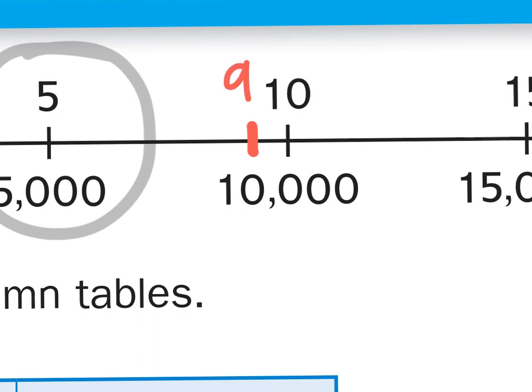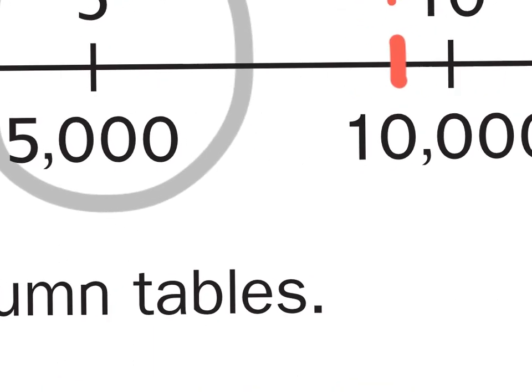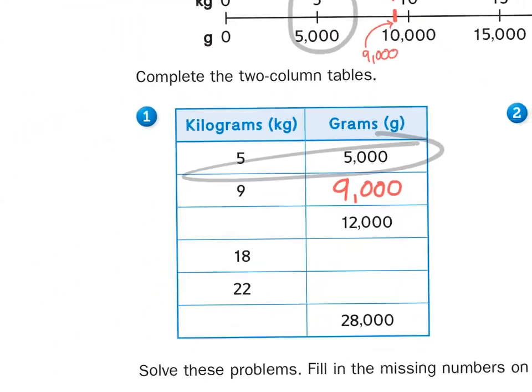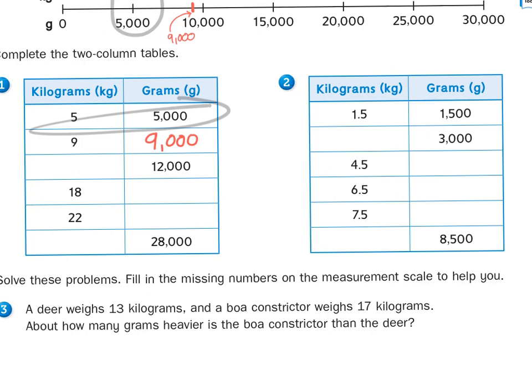9,000 grams would be right about here on that number line. So I could write a 9 right next to the 10. And if I had smaller handwriting, I could write 9,000 grams right next to it. So when we are converting grams to kilograms and vice versa, we just have to remember to either add three zeros or take away three zeros.